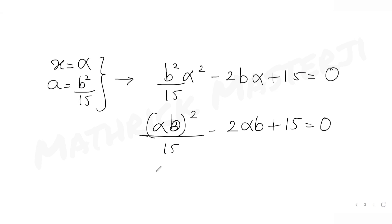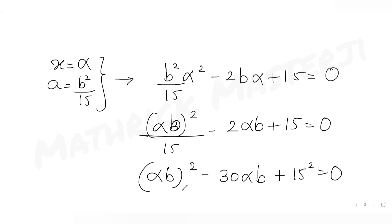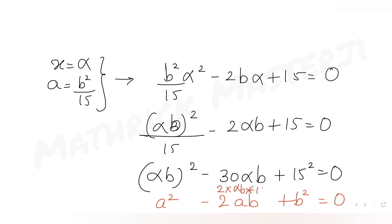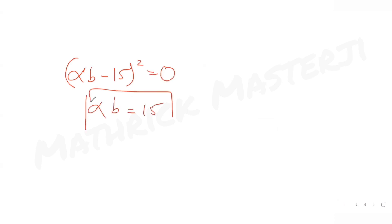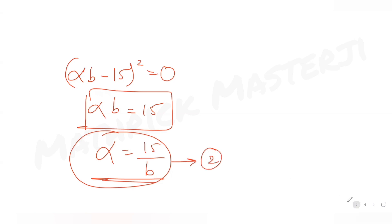Multiplying through, we get (αb)² - 30αb + 15² = 0, which is a perfect square of the form (A - B)² = 0, where A = αb and B = 15. So (αb - 15)² = 0, giving αb = 15, or α = 15/b. We label this as relation 2.